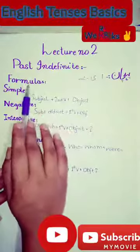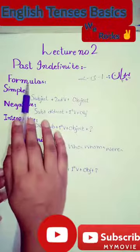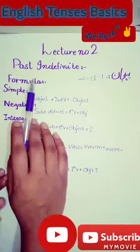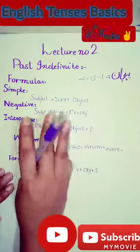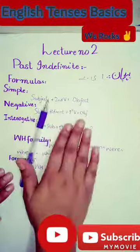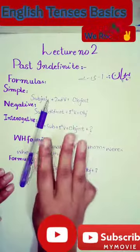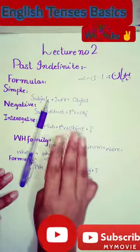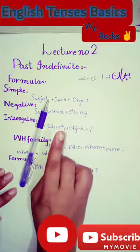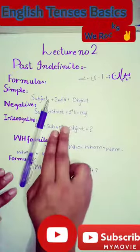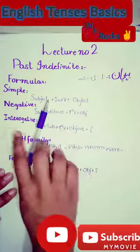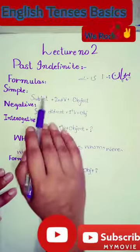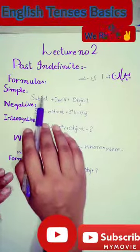What is the formula? What is the structure? Basically, there are three things that are compulsory. The first thing is the subject. The second thing is the verb. The third thing is the object. The subject is the person who is working or doing the action.